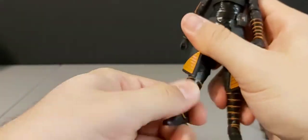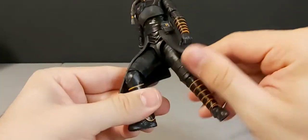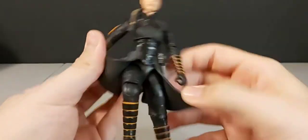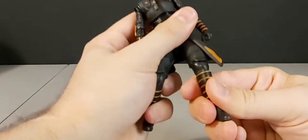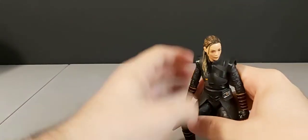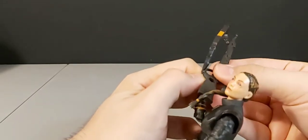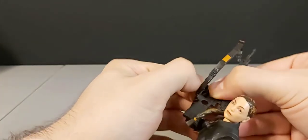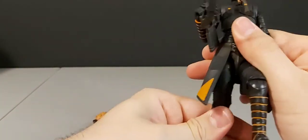But yeah. Short little figure. Articulation wise. Probably get some decent poses with her. They could have made this part soft goods, I guess. But, it's just soft enough rubber where if you want to get her bending her knees or doing something like that, you can get her in that kind of pose. See how she holds her gun here. See if we can get this gun in her hand. Yeah. It looks alright, I guess.